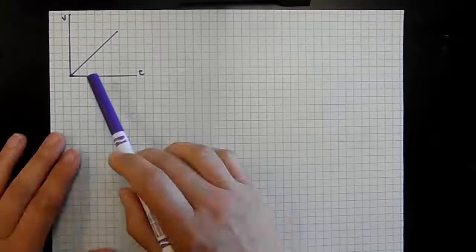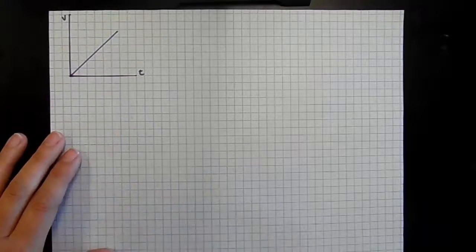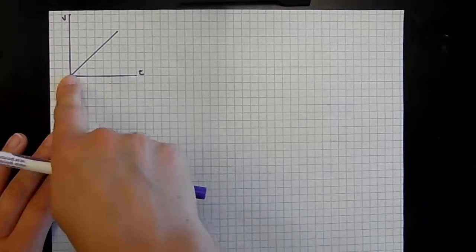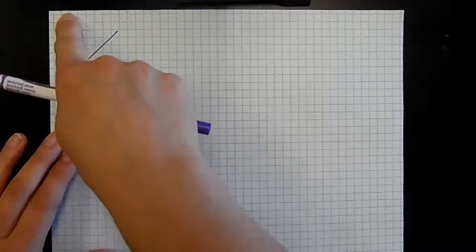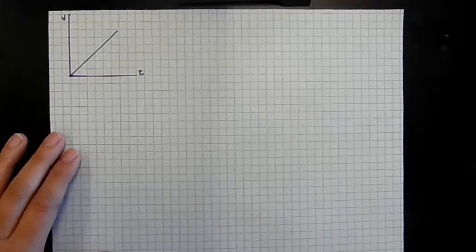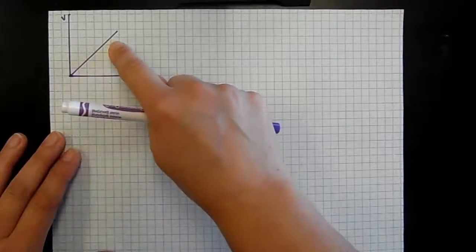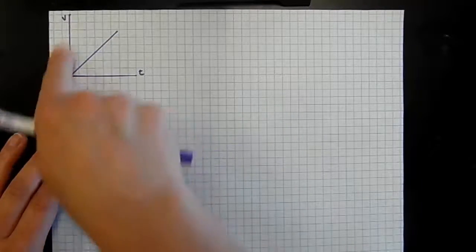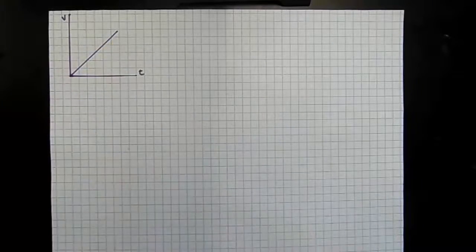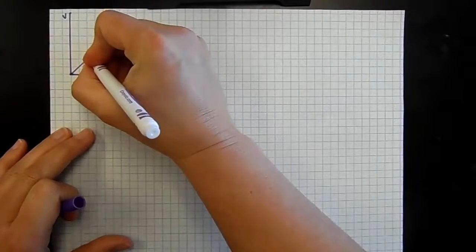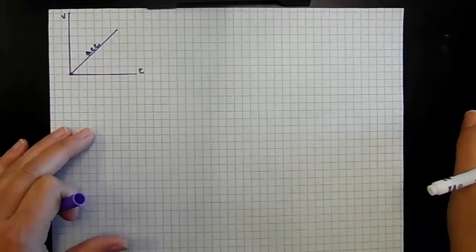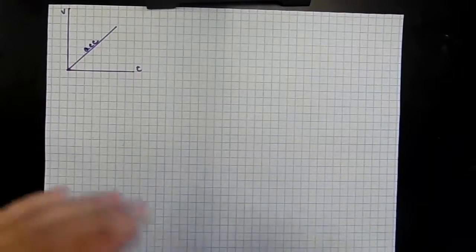What we have here is a constant change in velocity. This is our velocity axis, this is our time axis. As time increases, our velocity increases at a constant rate. This particular graph — a velocity-time graph — shows that this line is defined as the acceleration. So the slope of the line of a velocity-time graph is the acceleration of that object.